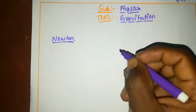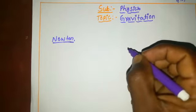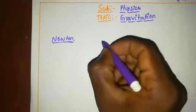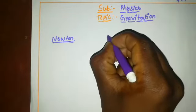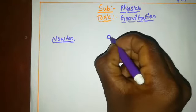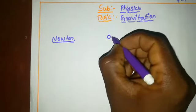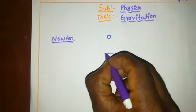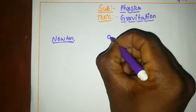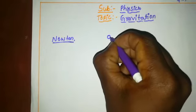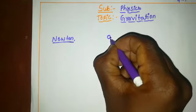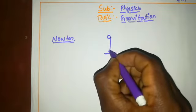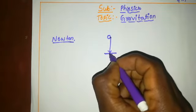We always observe that an object dropped from a height falls towards the ground. Here is the ground; the object is dropped from a certain height, it falls down and reaches the ground. This is because of gravitational force.